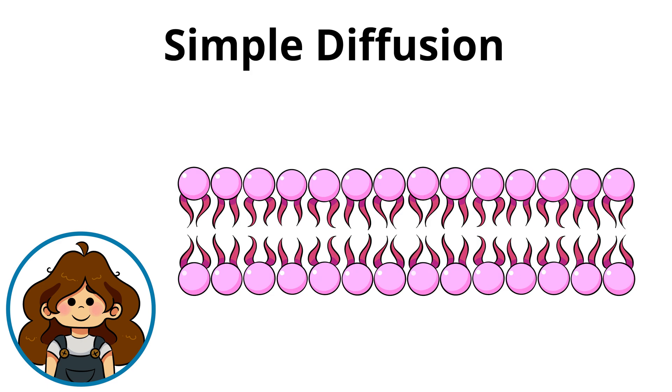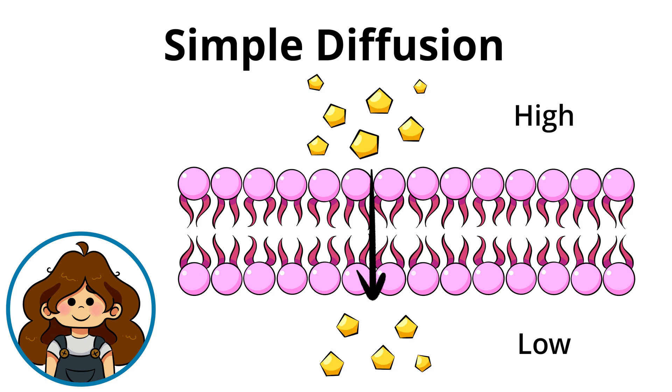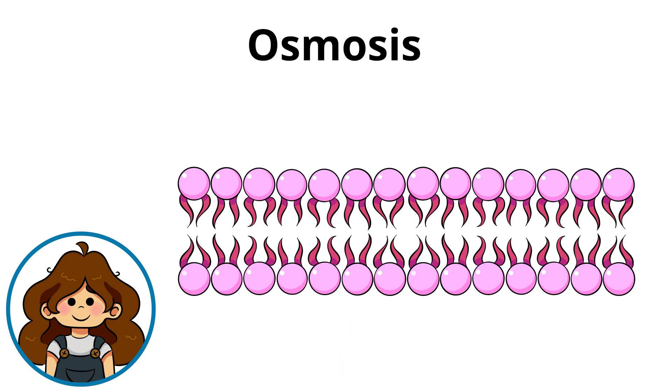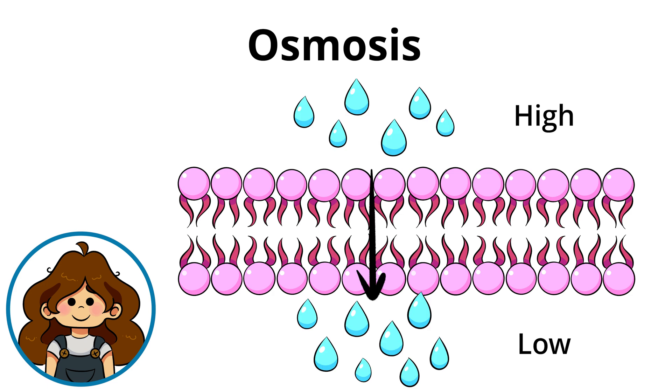The first is simple diffusion, where molecules move from an area of high concentration to that of low concentration, like how a spray bottle spreads water particles throughout a room. Next up is osmosis, where water molecules move across the two sides of the membrane to equal the concentration in both areas.